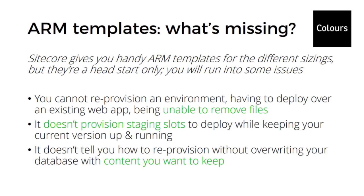What is actually missing in the Sitecore ARM templates if you have this kind of wish list? First, you cannot reprovision an environment — you can do it once and deploy to it very well, but you won't be able to delete files that are already there. There are some tricks using FTP to the environment or other methods to remove files, but that's not an automatic process. It also doesn't provision staging slots, so ideally you want those within your initial script as well. And it doesn't tell you how to reprovision without overriding your database content — if you use the Sitecore default script it just sets up a new environment every time you run it.